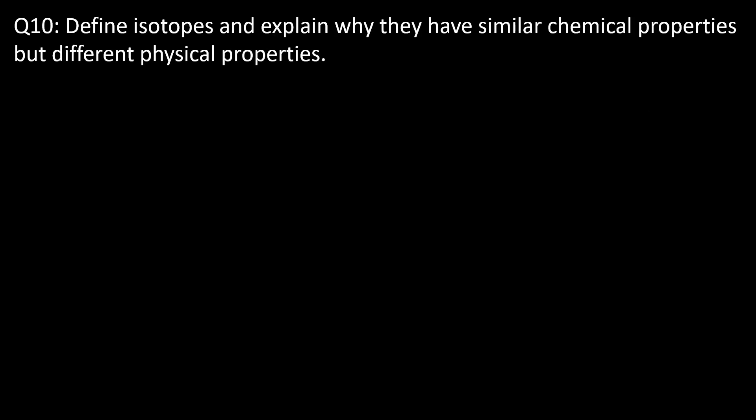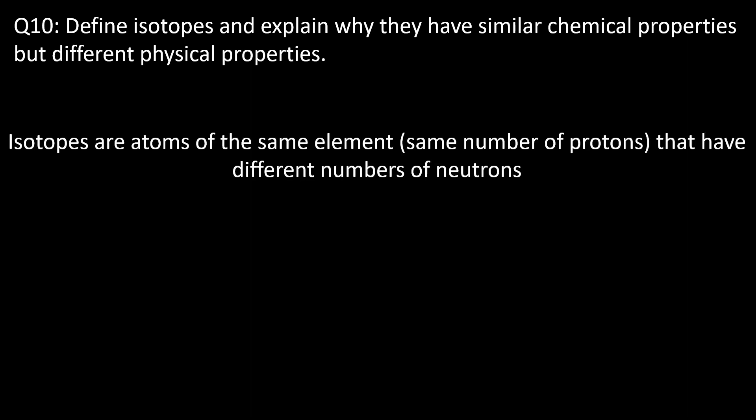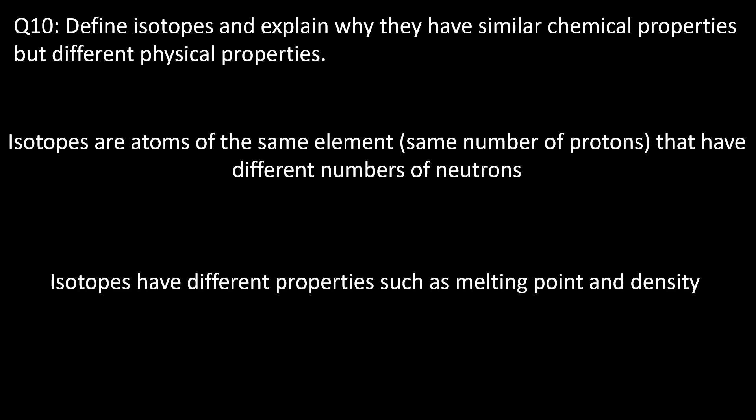Question ten: define isotopes and explain why they have similar chemical properties but different physical properties. Isotopes are atoms of the same element that have the same number of protons but different numbers of neutrons, leading to different mass numbers. They share similar chemical properties because they have the same number of electrons, but they can have varying physical properties due to their different masses and therefore different nuclear forces — for example, different melting points or densities.